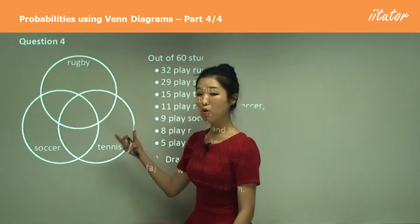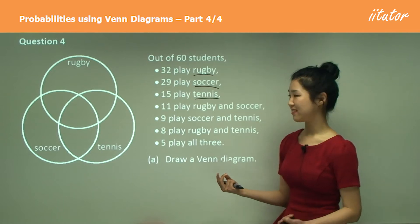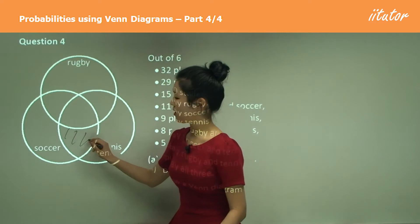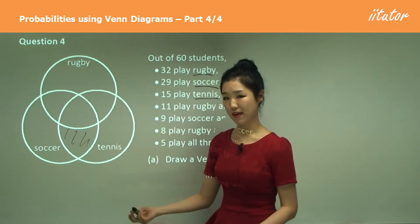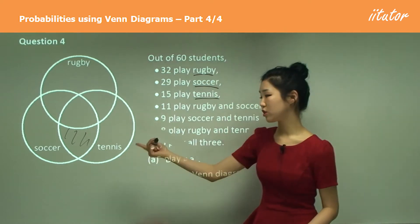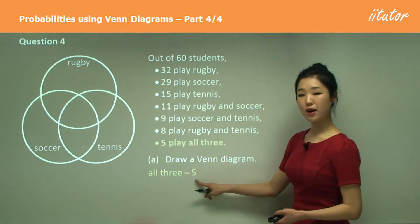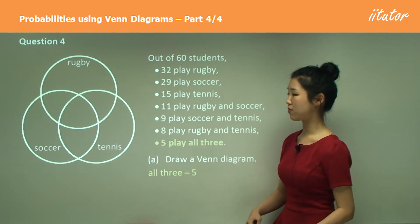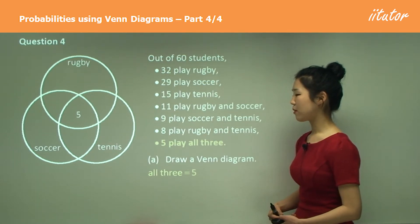The middle part where all three overlap is the number of players who play all three sports. This part here is the number of players who play both soccer and tennis but not rugby. Similarly, here would be rugby and tennis but not soccer, and here soccer and rugby but not tennis. We know that all three is simply five because they tell you five play all three, so you can just directly put that into the middle.